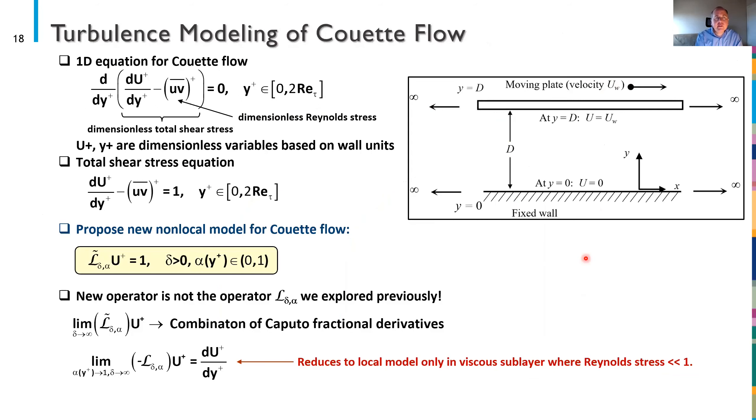So the last example I'm going to give you is an example of turbulence modeling of Couette flow and as a reminder for Couette flow what we have is two infinite plates the bottom plate is fixed the top plate is moving to the right with some velocity uw and we'll assume that this velocity for whatever the Reynolds number is is fast enough to produce turbulent Couette flow as opposed to laminar Couette flow. If you simplify the RANS equations appropriately and normalize the classical 1D equation you get for Couette flow is here where the term in parentheses is the dimensionless total shear stress and uv plus is the dimensionless Reynolds stress.